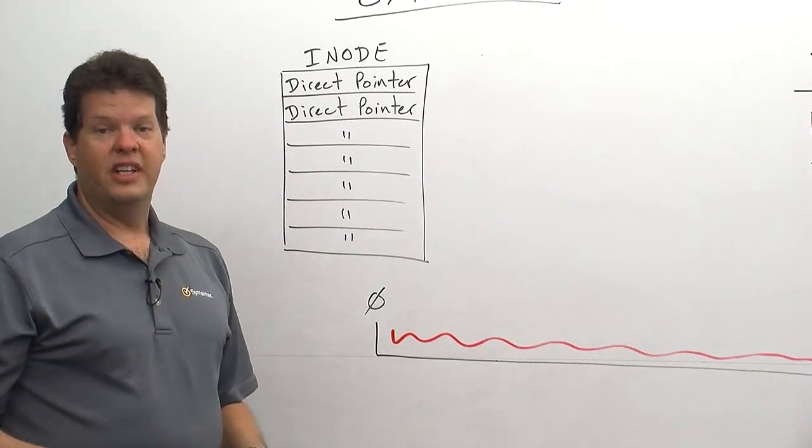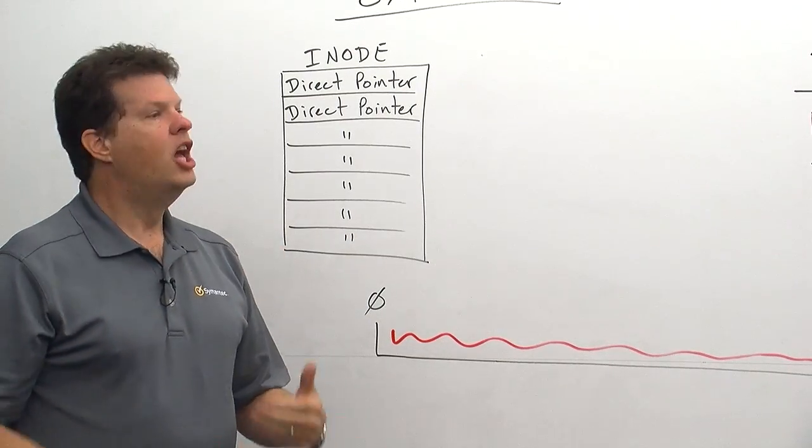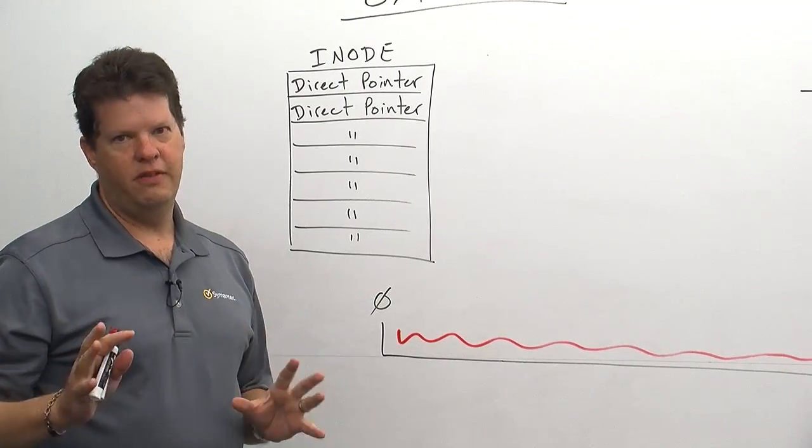And we keep track of this in the inode table with a series of pointers. So the optimum use of an extent-based file system is to have one extent per file. Nice sequential writes, nice sequential reads. Very good performance.